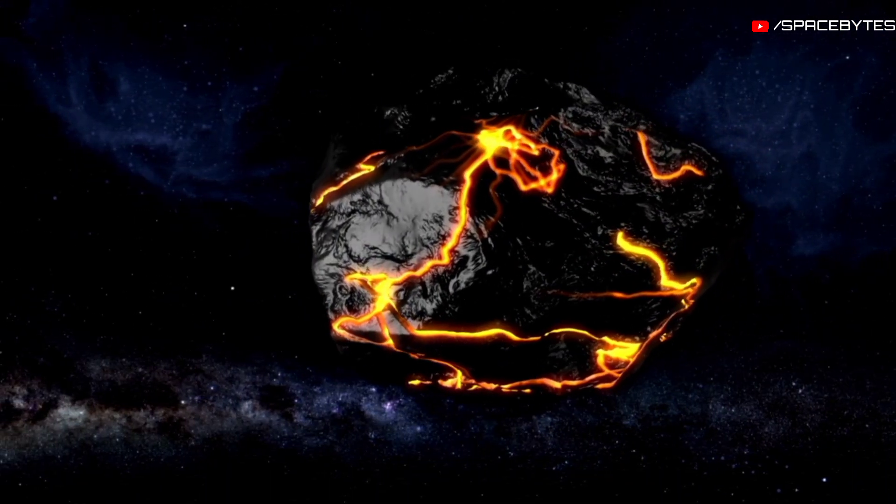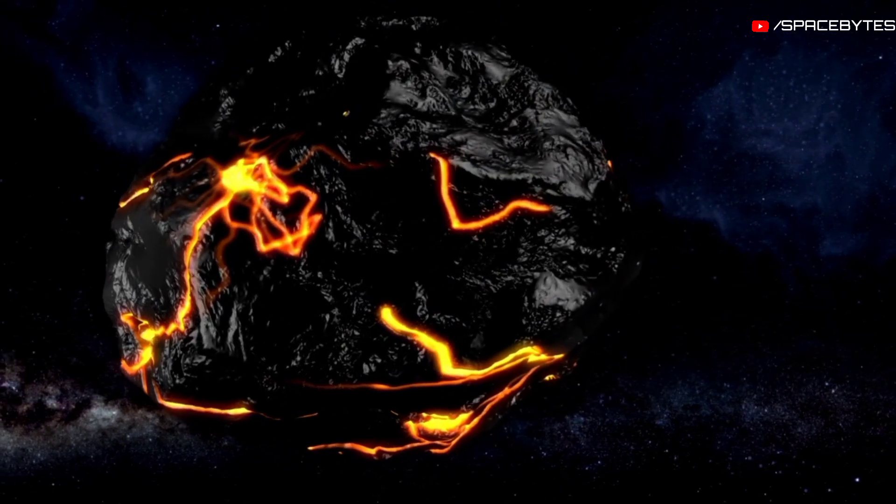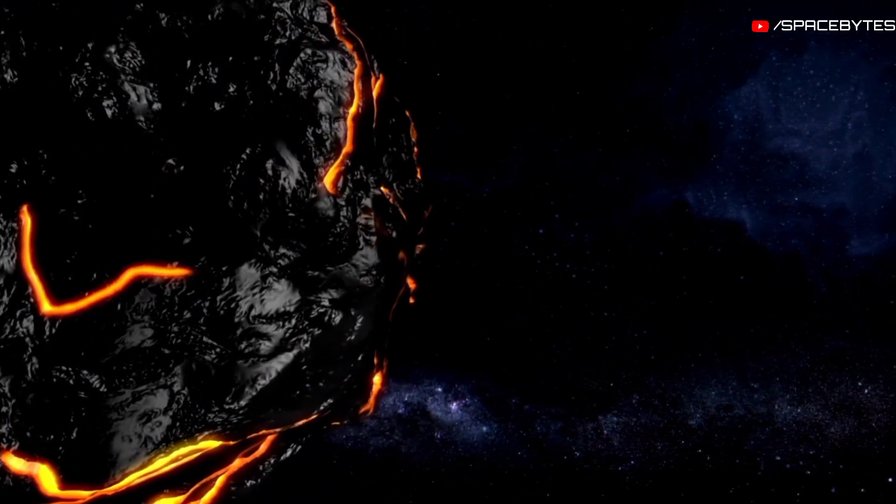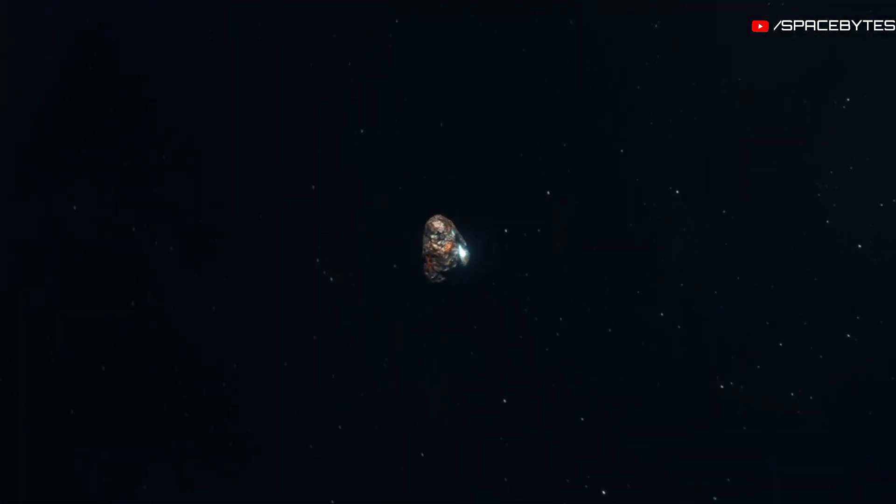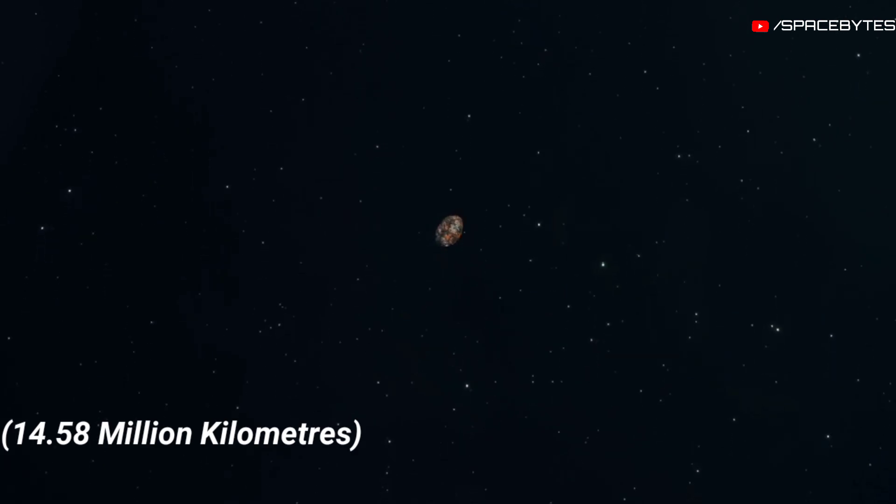The next close approach of asteroid 2019 AV-13 to our planet will happen on August 25th, 2051. On that day, its distance to Earth will be 14.58 million kilometers.